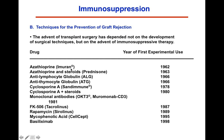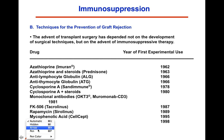The first actual drug used for immunosuppression was azathioprine, or Imuran, back in 1962.